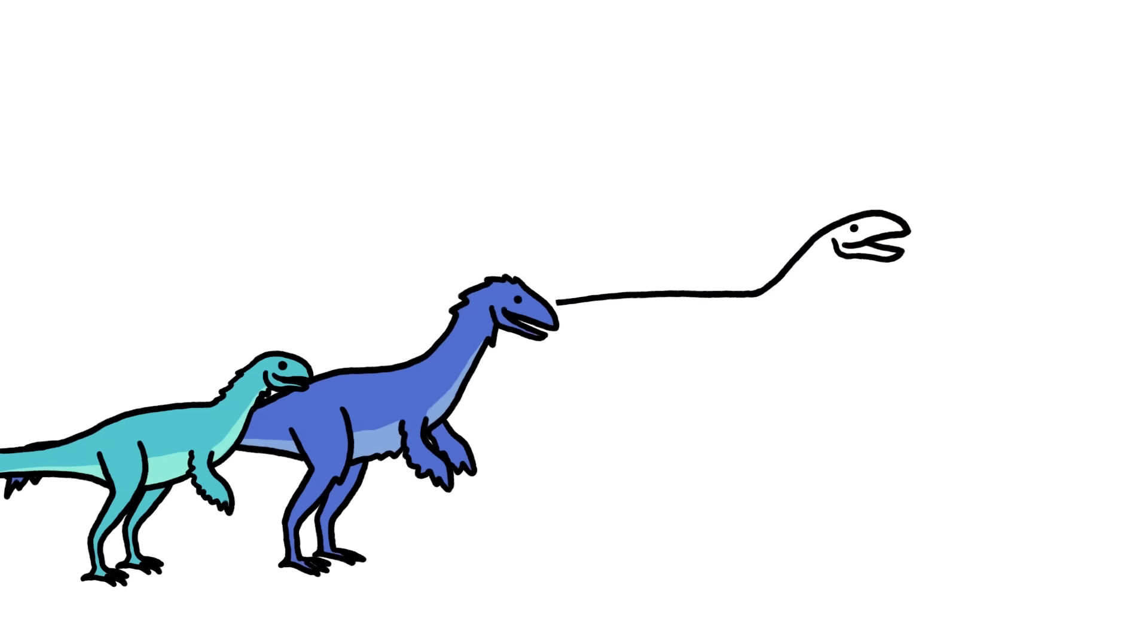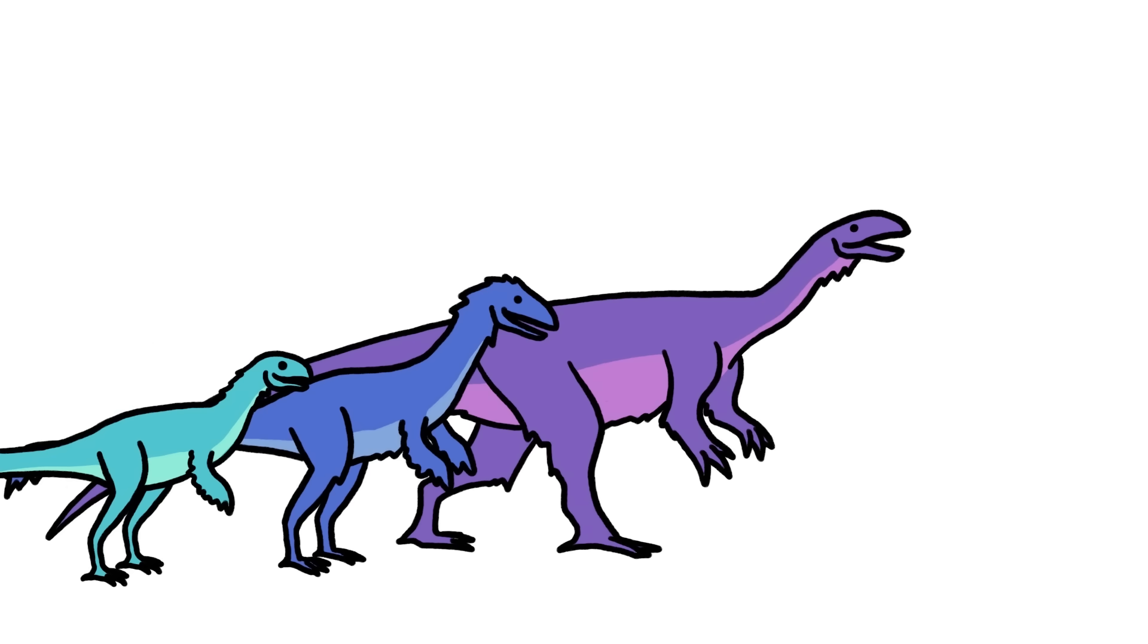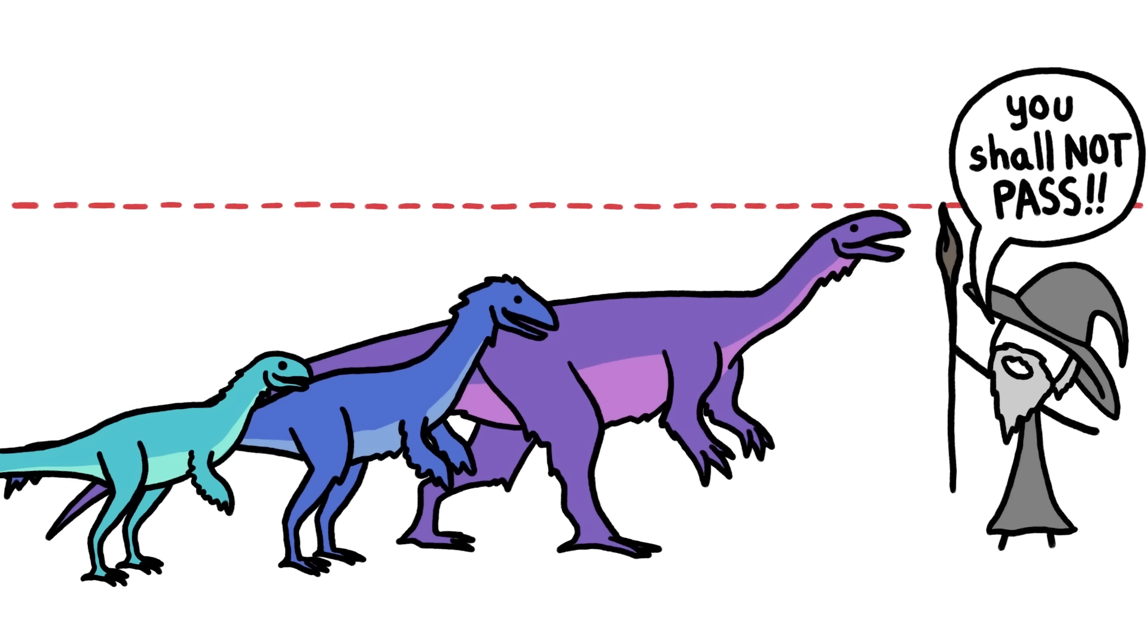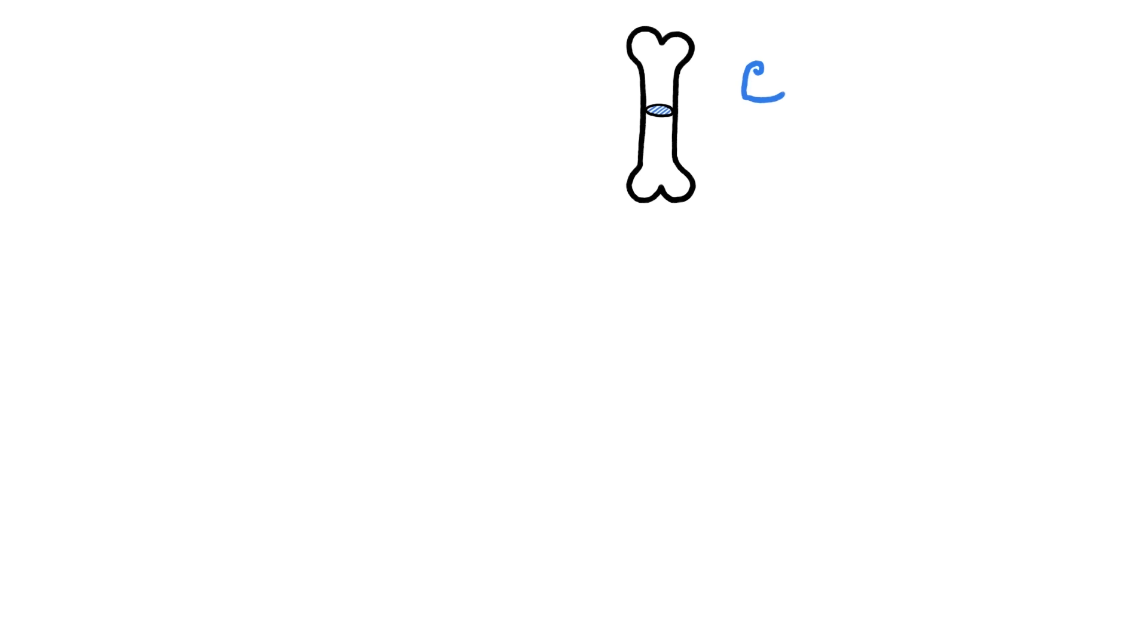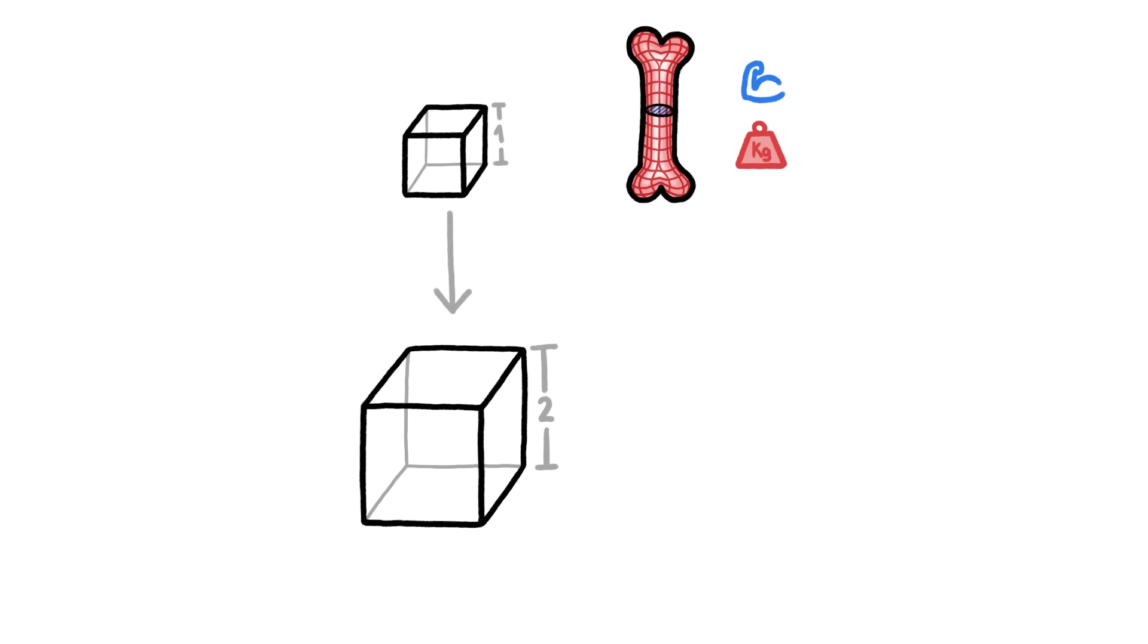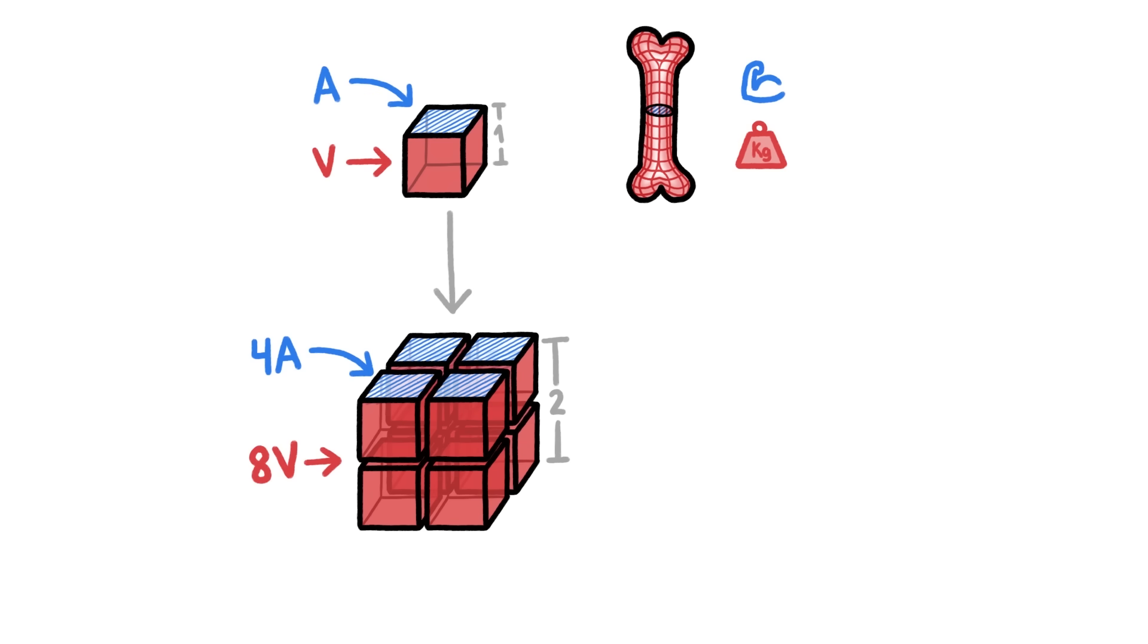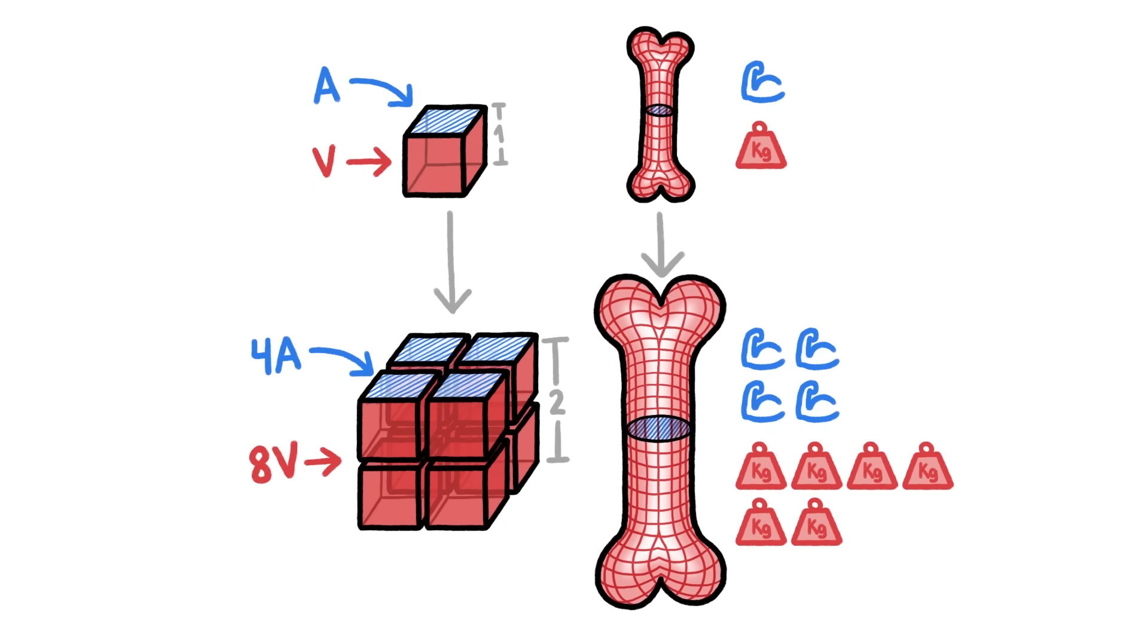Dinosaurs, on the other hand, got pretty darn big without any outside help. But, at some point, they hit a limit due to the so-called square-cube law. Body strength is based on the cross-sectional area of bones and muscles. But weight is based on volume. And just like doubling the height of a cube causes its cross-sectional area to get four times larger, but its volume to get eight times larger. When an animal gets bigger, it does get stronger, but it gets way heavier.